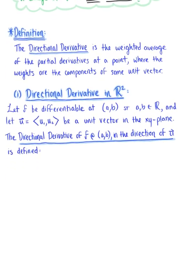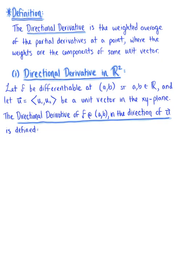Let's look at how we are going to compute this. Here's our official definition. Keep in mind that the directional derivative is a weighted average of the partial derivatives at some point, where the weights are the components of a unit vector. So here is the directional derivative in R2. We want to let f be differentiable at some ordered pair (a, b), where a and b are scalar values. And we're going to let vector u be a unit vector in the x, y plane.